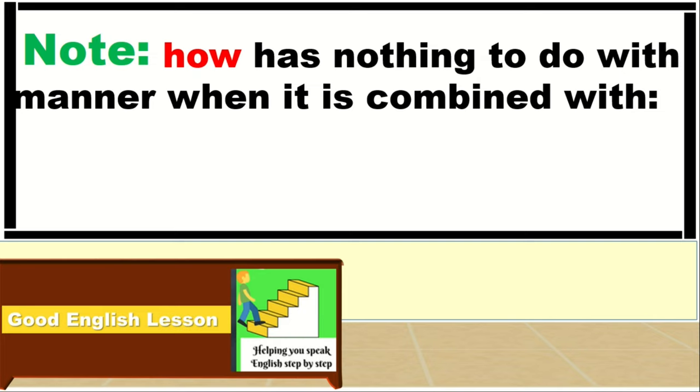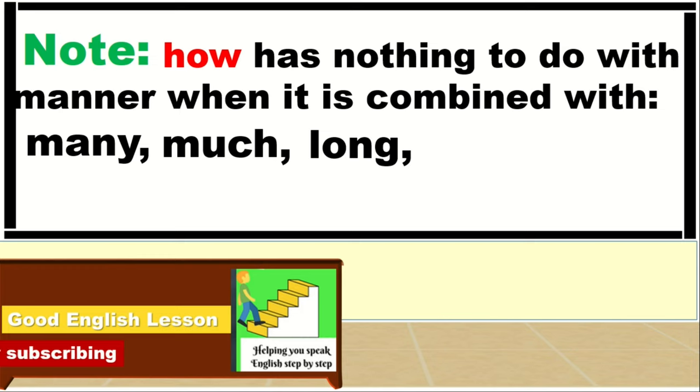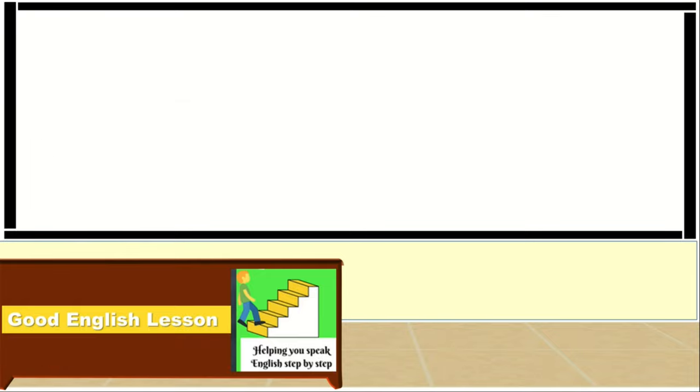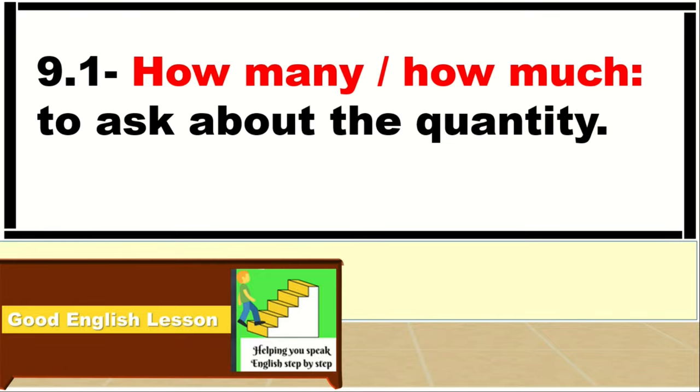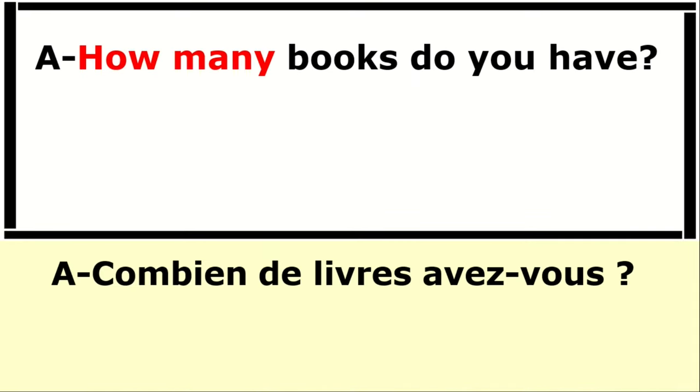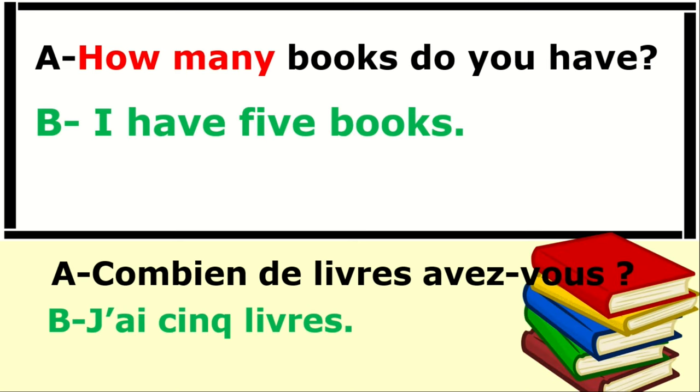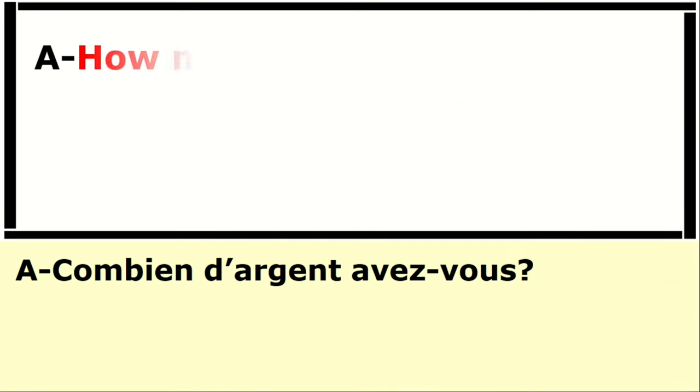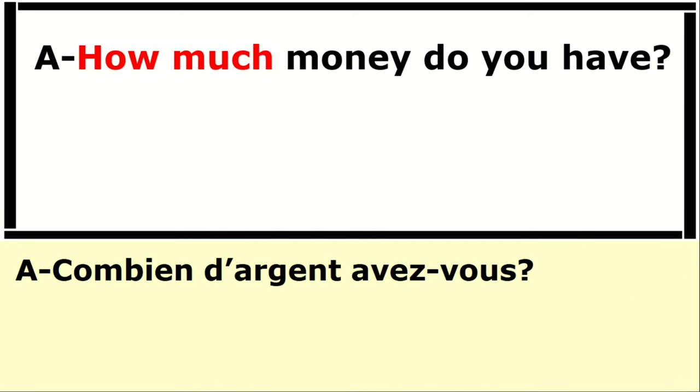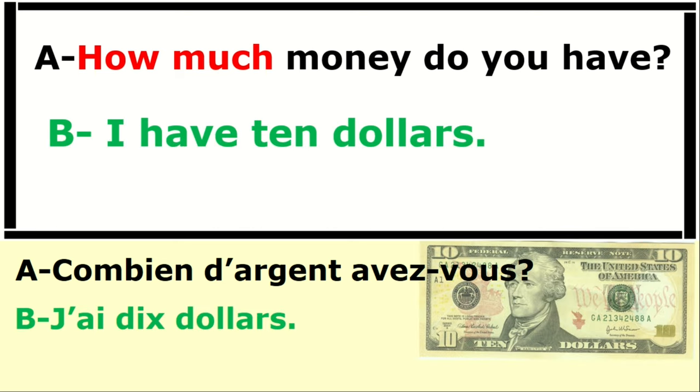HOW has nothing to do with manner when it is combined with many, much, long, far, or old. How many and how much: use them to ask about quantity. How many books do you have? I have five books. How much money do you have? I have ten dollars.